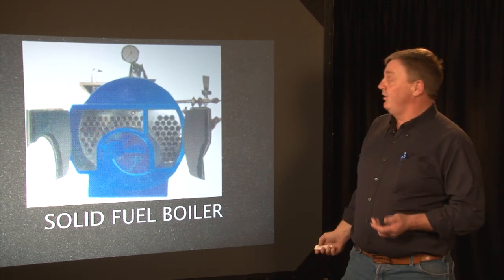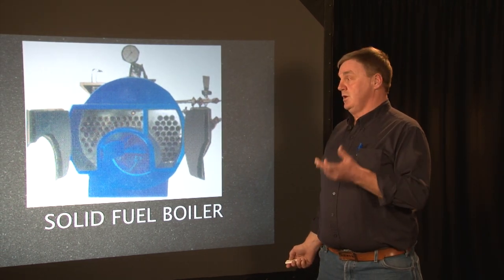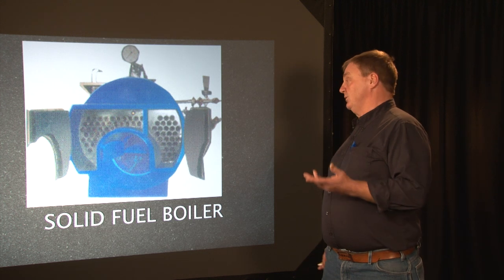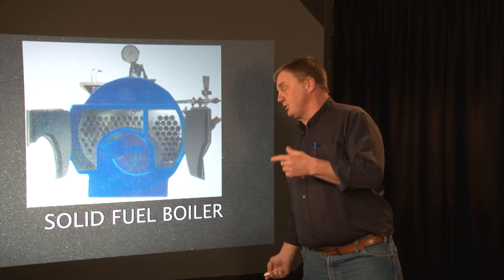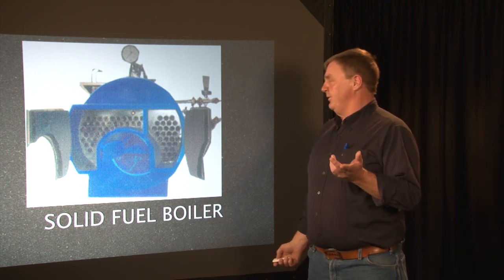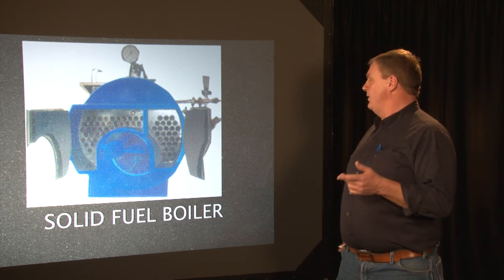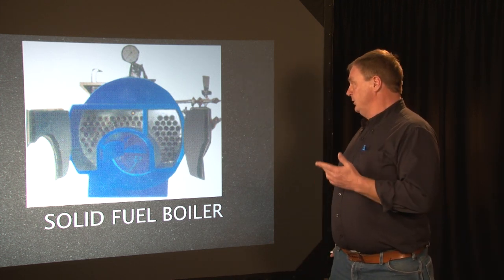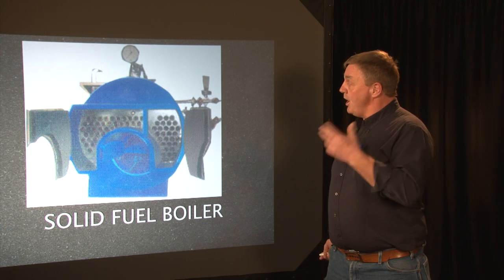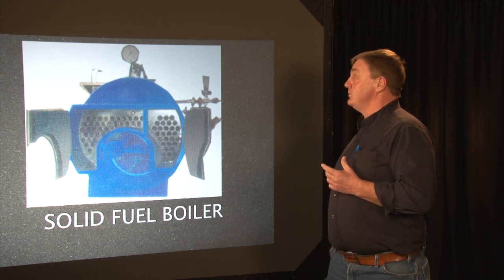The boiler generates heat into steam. The water is pressurized and becomes steam. At sea level, steam is created at 100 degrees Celsius — 212 degrees Fahrenheit. Then it's pushed through under pressure. The higher the pressure, the less heat it takes to create steam.